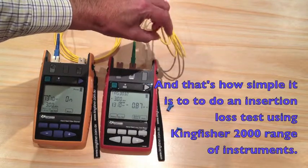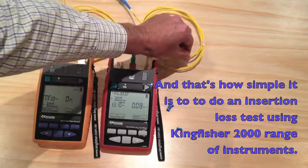And that's how simple it is to do an insertion loss test using Kingfisher 2000 range of instruments.